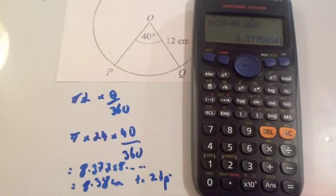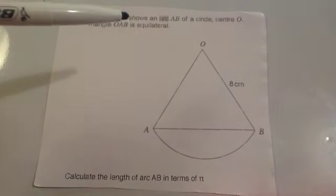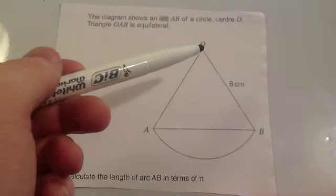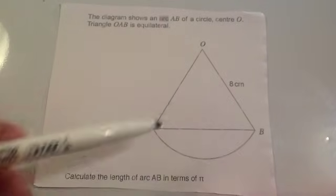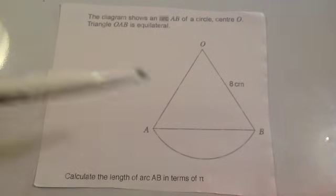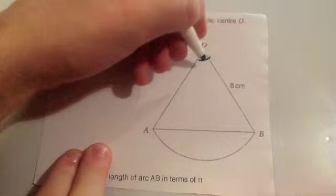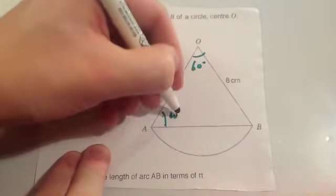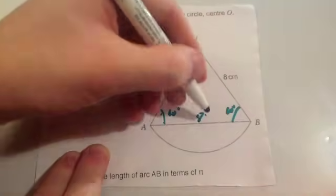Let's look at a non-calculator question. The diagram shows an arc AB of a circle, centre O. You've got your arc AB going around from here to here - that's your sector. It says triangle OAB is equilateral, so this angle here is 60 degrees, this angle 60, this angle 60. It would also mean that all the sides are 8 centimetres long.